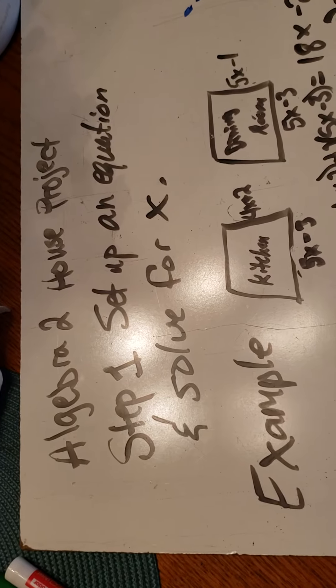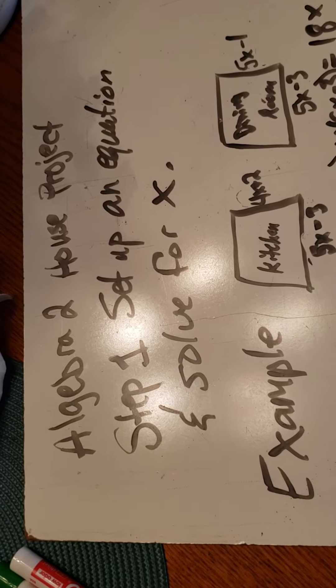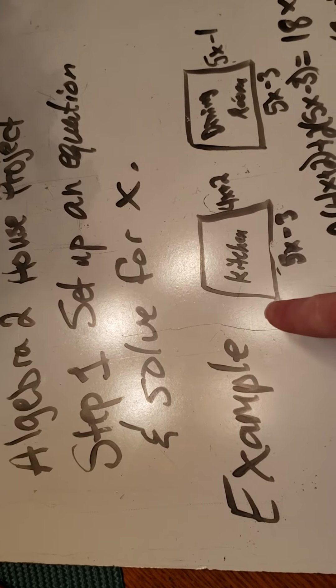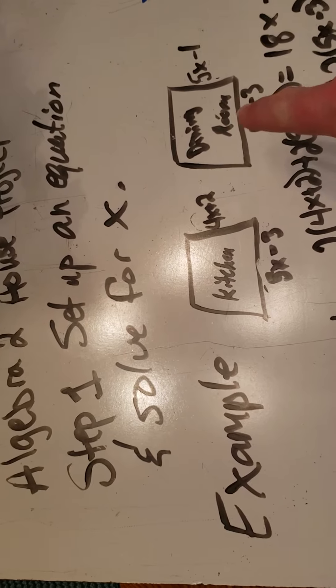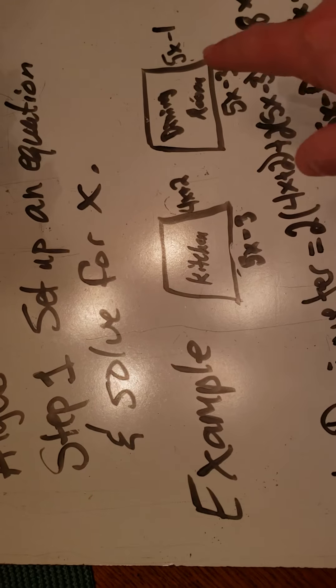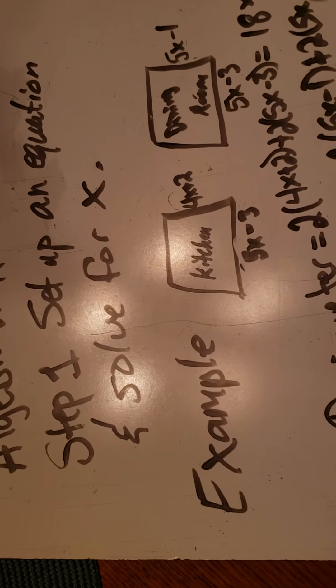Here is an example of how to set up an equation and solve for x in your house project. In your problems it says the kitchen and the dining room have the same perimeter. This is an example. These are not the numbers or the polynomials that you'll get for your house. This is just an example.